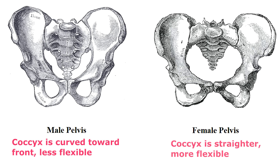Like I mentioned in my video comparing the male pelvis versus the female pelvis, the male coccyx bone tends to curve more forward toward the front of the pelvis, whereas the female coccyx bone tends to be a little straighter.